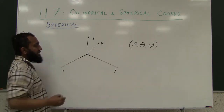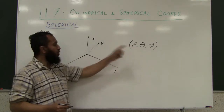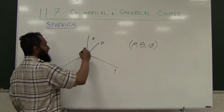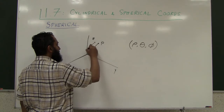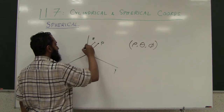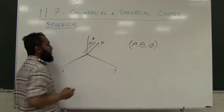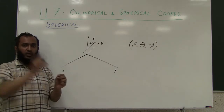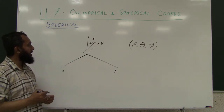Rho is the distance of the point from the origin. This distance right here is rho. It's basically the distance of the point from the origin — very simple to understand.